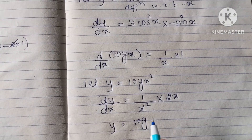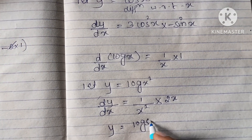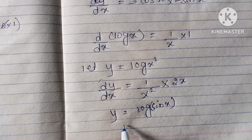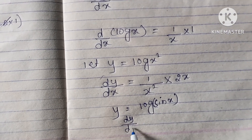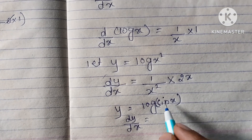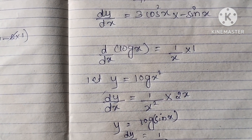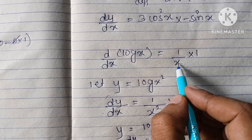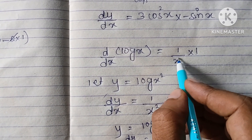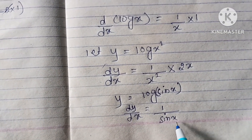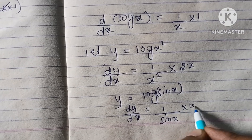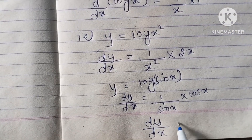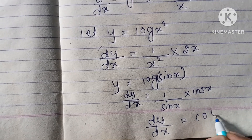Differentiation of log(sin x). We have one question: differentiation of log(sin x). Here also it is the same. y becomes dy by dx. Consider sin x as x. Differentiation of log x is 1 by x — x here is playing the role of sin x. Just as 1 by x into 1 is written here because differentiation of x is 1, here we know the differentiation of sin x is cos x. So the final answer is dy by dx equals 1 by sin x into cos x, which is cos x by sin x — that is cot x.